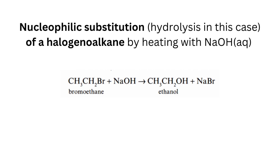Nucleophilic substitution — hydrolysis of a halogenoalkane by heating with aqueous NaOH. Bromoethane plus NaOH gives ethanol plus NaBr.